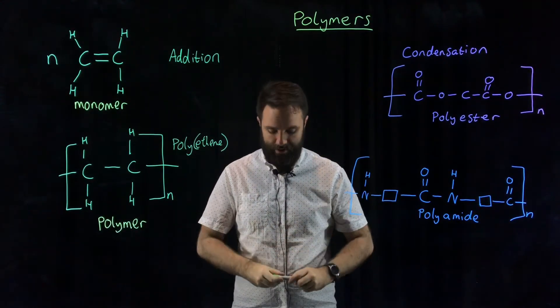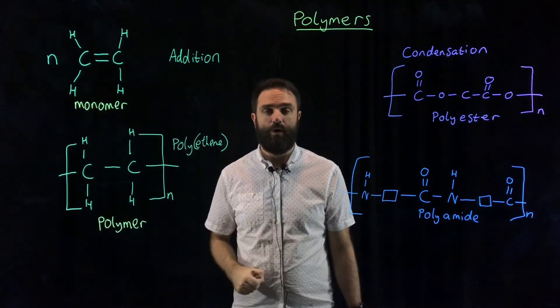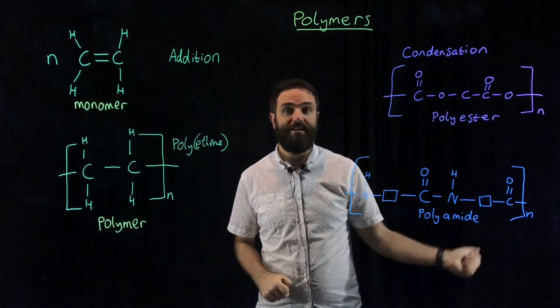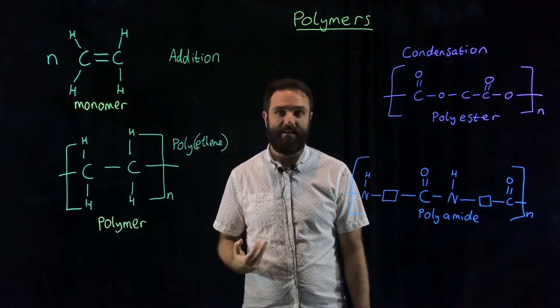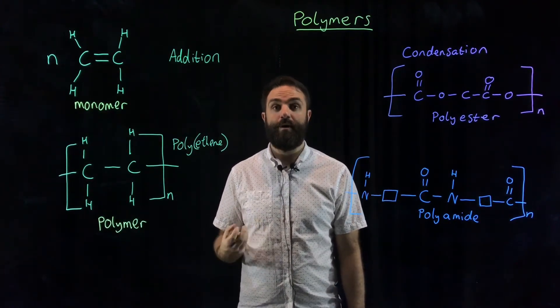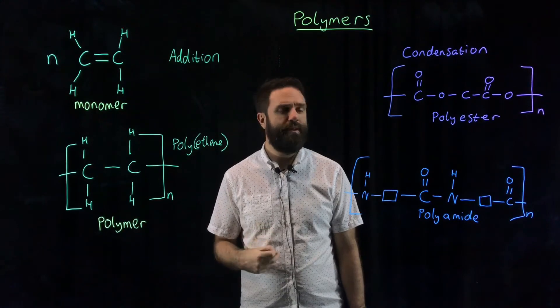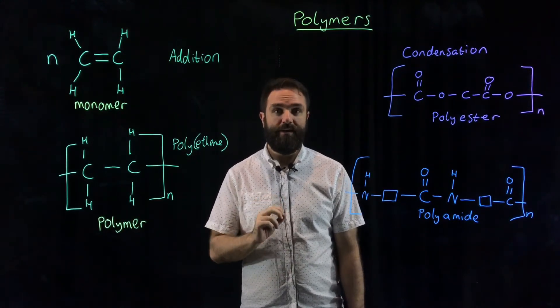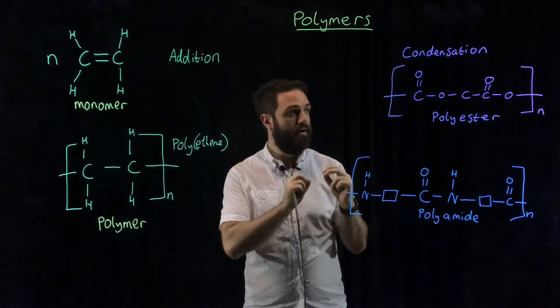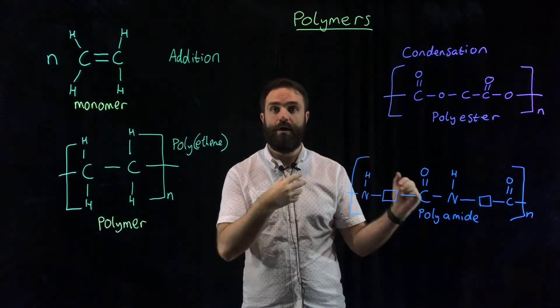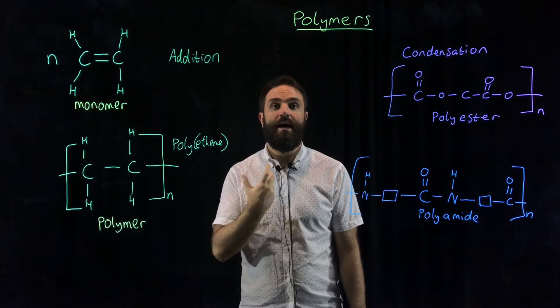The other type of polymer that you can make is slightly more complicated and that's called a condensation polymer. Now we've looked previously at making esters and esters form from a condensation reaction. It's exactly the same. The only difference is the monomer this time has a carboxylic acid on both ends and an alcohol on both ends. We call those di-carboxylic acids and di-alcohols.